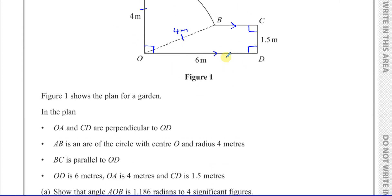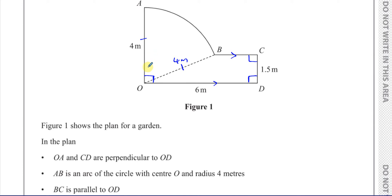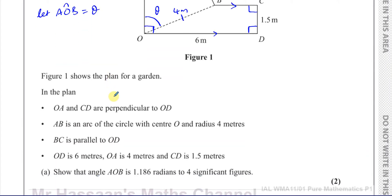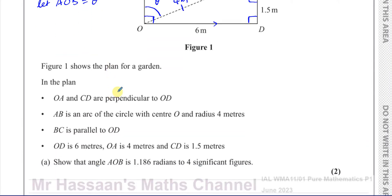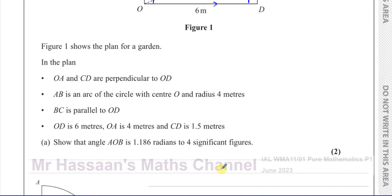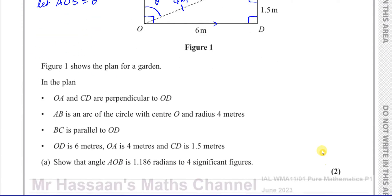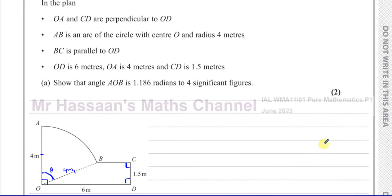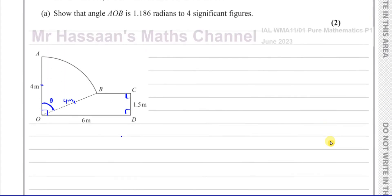We have to show that angle AOB — let's call it theta — is 1.186 radians to 4 significant figures. That information is shown on the diagram.